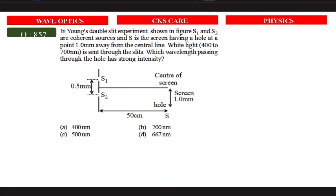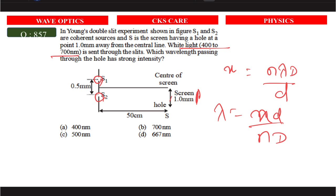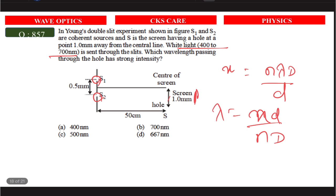In Young's double slit experiment, S1 and S2 are coherent sources and S is a screen having a hole at a point. There is a white light of 400 nm sent through the slit. Which wavelength passing through the hole has strong intensity? Using x = nλD/d, we get λ = xd/(nD).